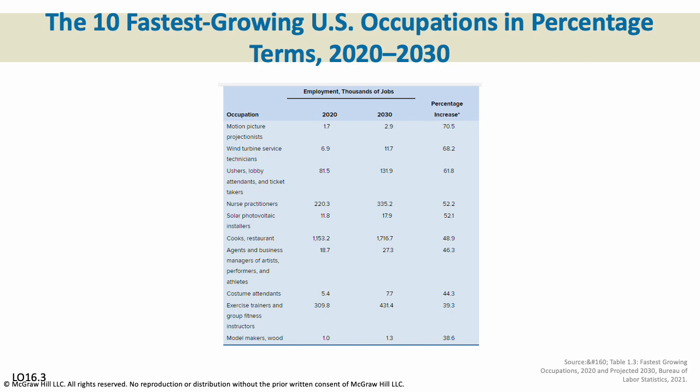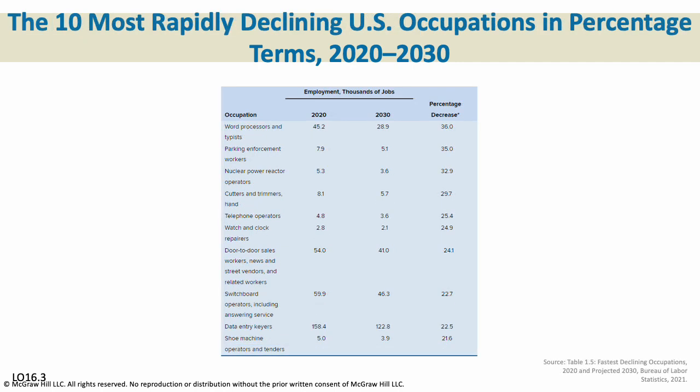Here are some of the fastest-growing occupations projected through 2030, and here are ones projected to decrease — a lot of them are jobs from the past or things that have been replaced by machinery. Trends in labor change all the time — that is just a fact of life and something to keep in mind.